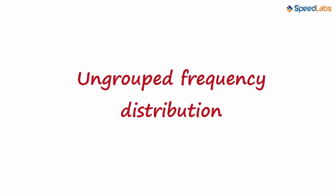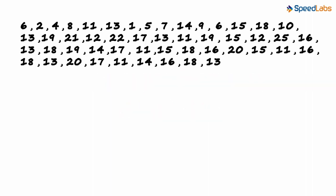Previously we looked at ungrouped frequency distribution. But what if our data looks something like this? The lowest number is 1 and the highest number goes up to 25. We cannot write 25 rows of numbers and find tally marks for each.